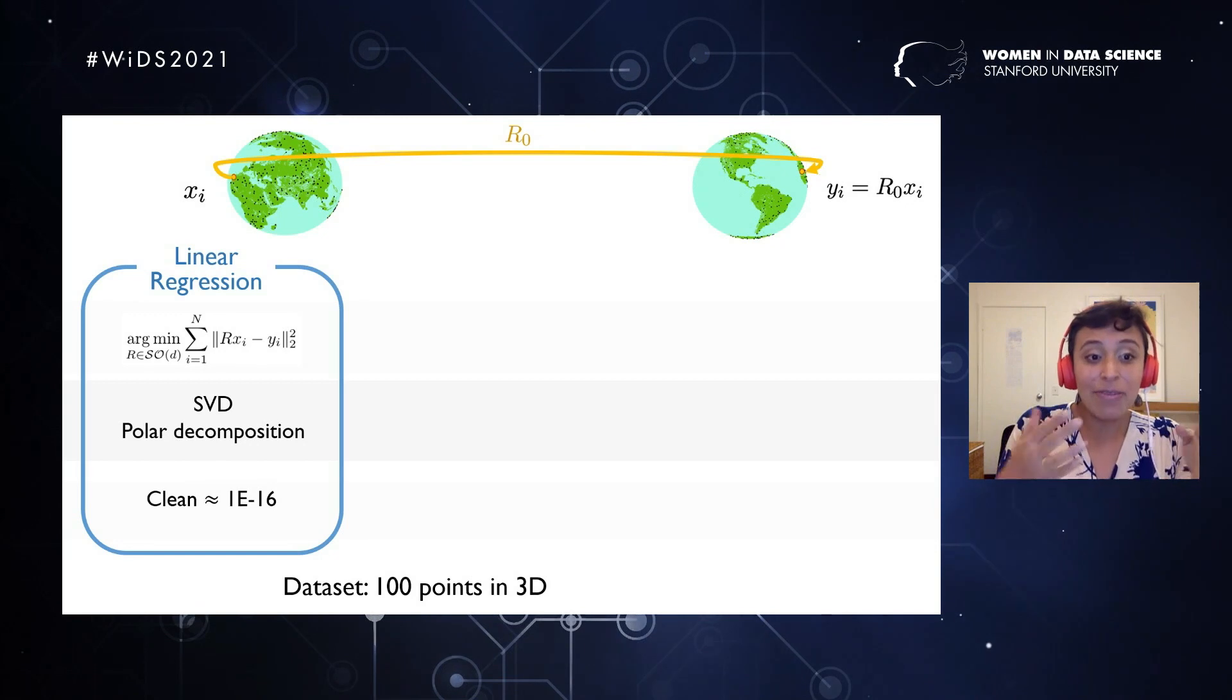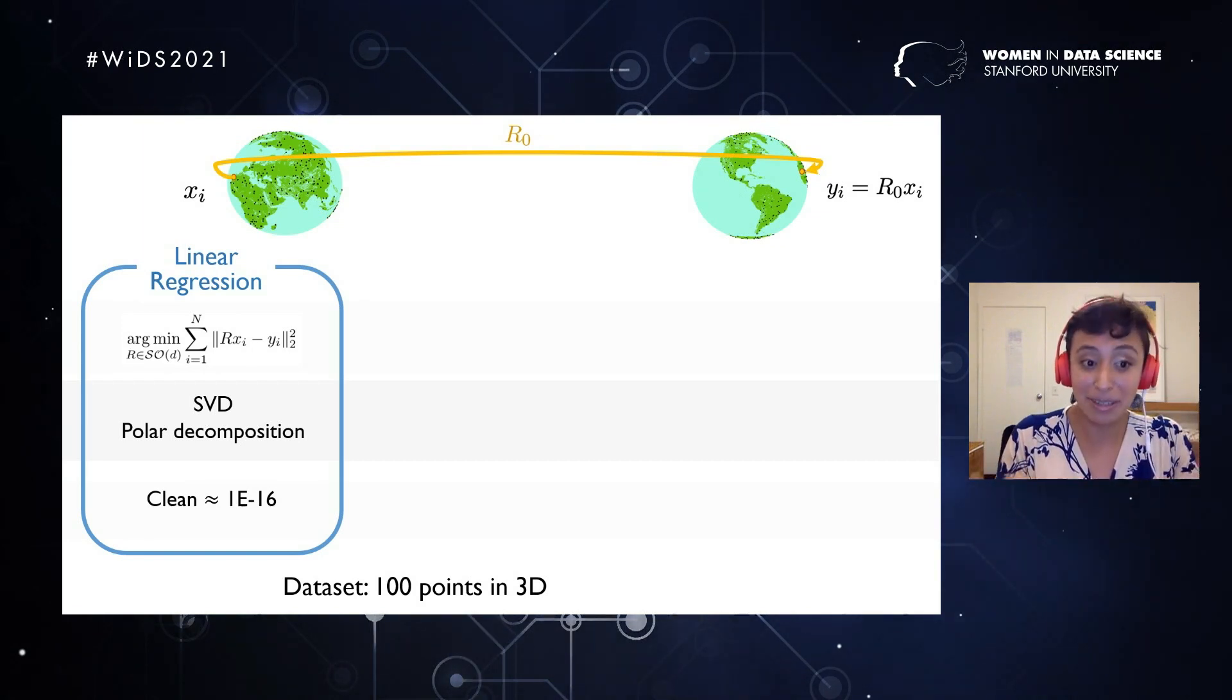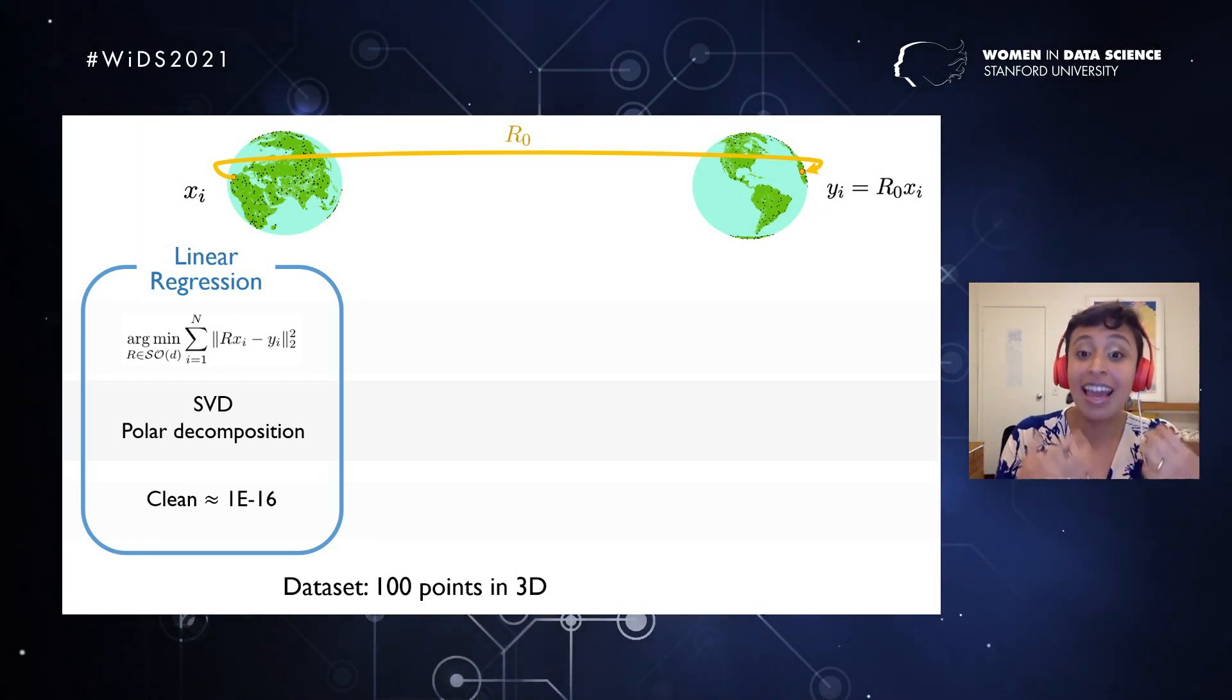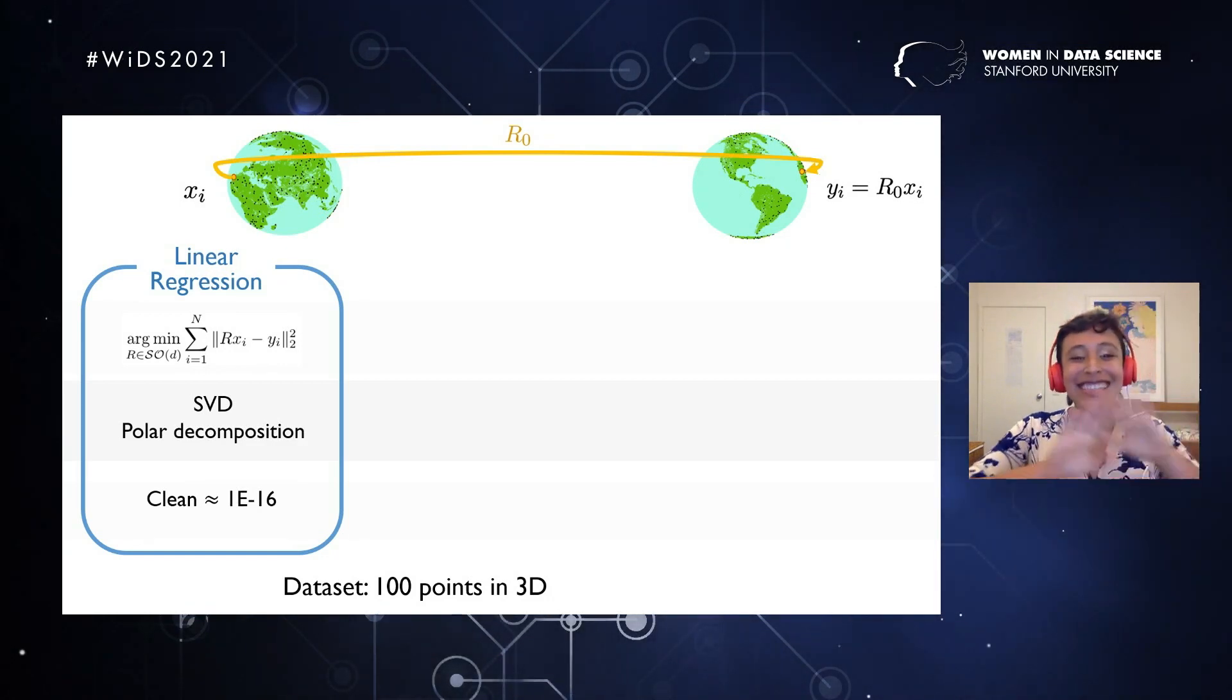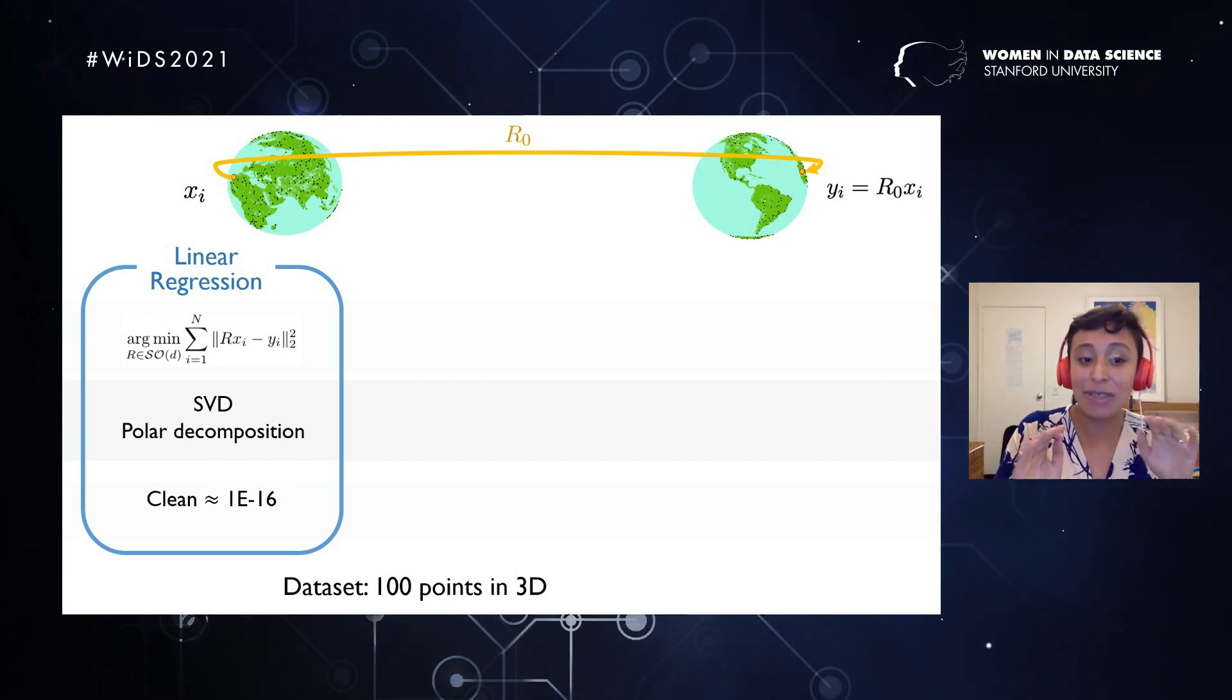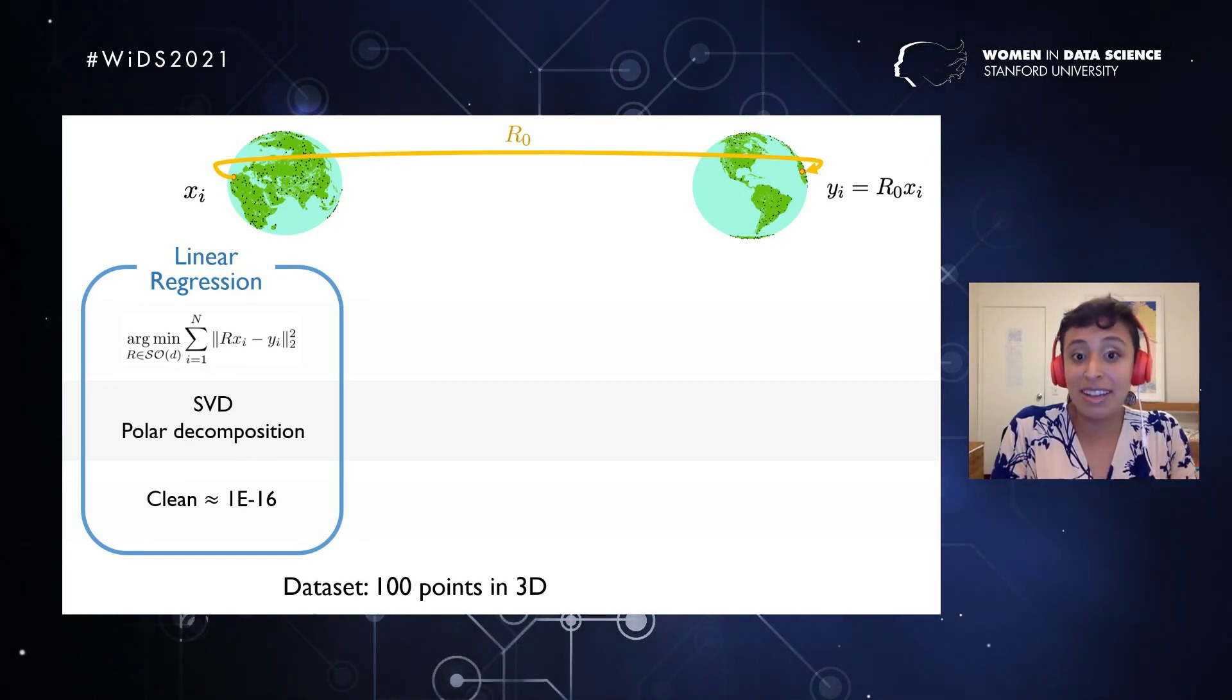How can we find a solution there? Well, actually for those of you that know SVD or PCA, that decomposition, that matrix decomposition helps us to define this rotation. And in particular, there is a specific decomposition called the polar decomposition that gives us back the rotation that we are looking for. When our data is extremely clean, we can get up to machine precision, and then we are solving our problem.